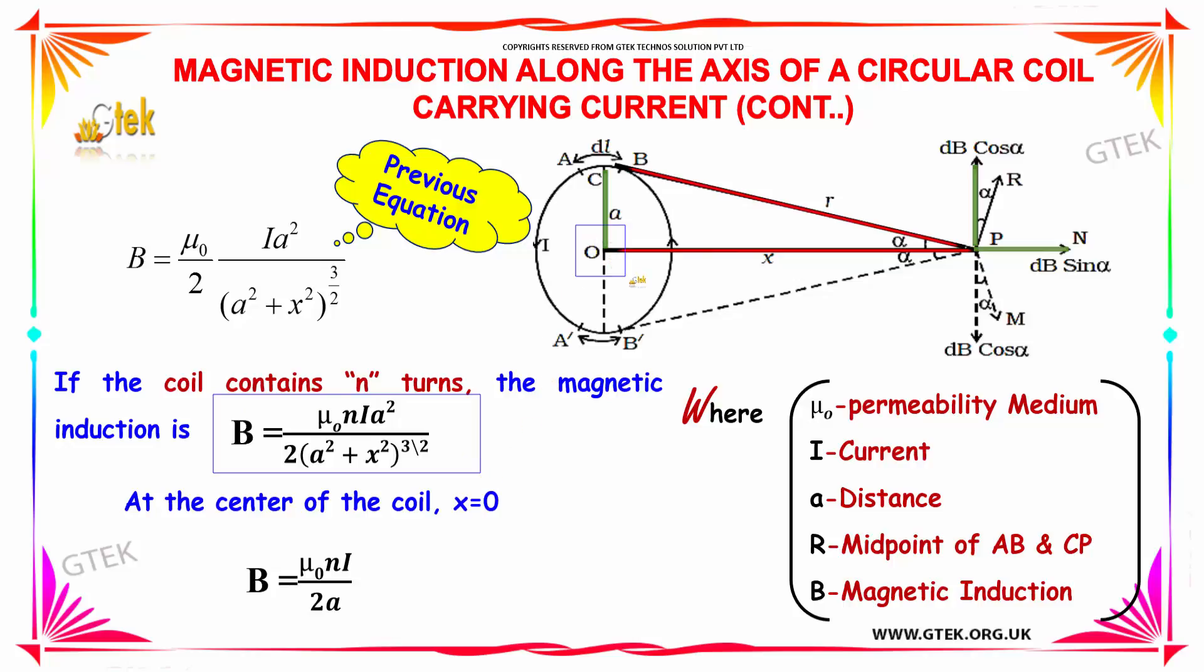At the center of the coil, x is equal to 0, which indicates we will be getting mu0 into n into i into A square divided by 2 into A cube. A cube and A square will be cancelled and it will become 2A. This is the final equation and this is the magnetic induction which is created at the center of the circular coil.